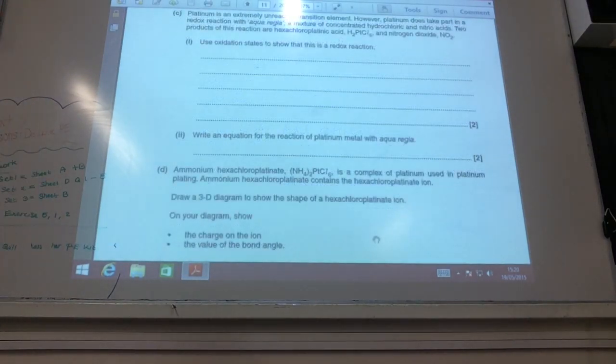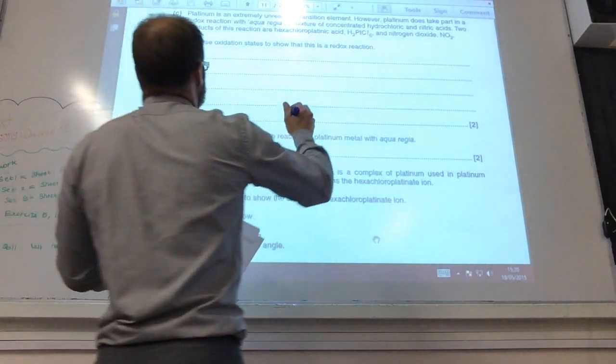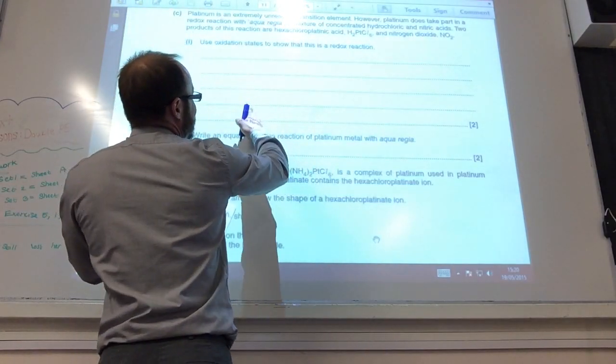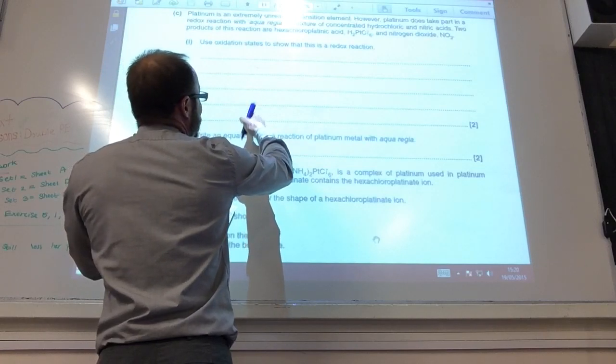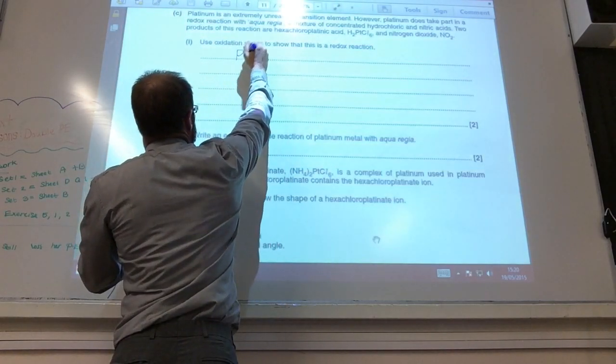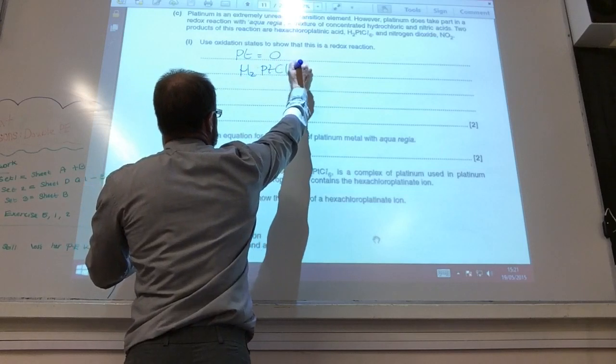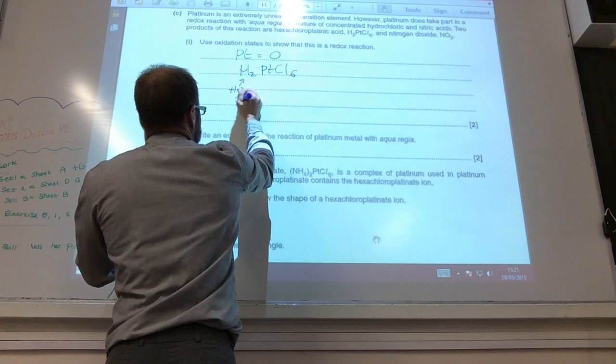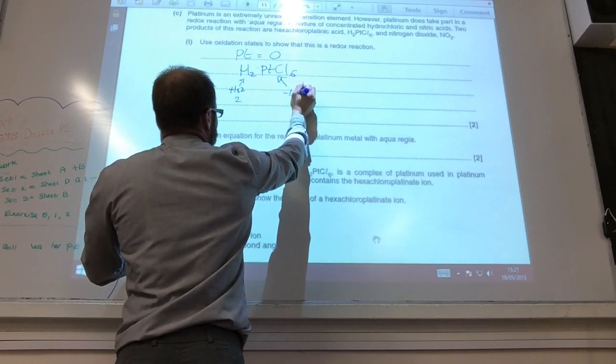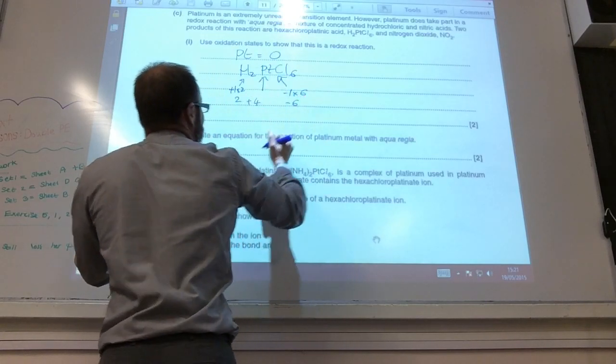Alright, a little bit about platinum chemistry now. Use oxidation states to show this is a redox reaction. So I have got platinum reacting with hydrochloric acid and nitric acid to give me hexachloroplatinate and nitrogen oxide. So platinum metal has oxidation state zero, but in H2PtCl6, what's its oxidation state? Well, each hydrogen is +1 and I've got 2, so overall it's 2. Each chloride is -1 and I've got 6, so overall that's -6. So in order to get that to work, platinum must be +4.